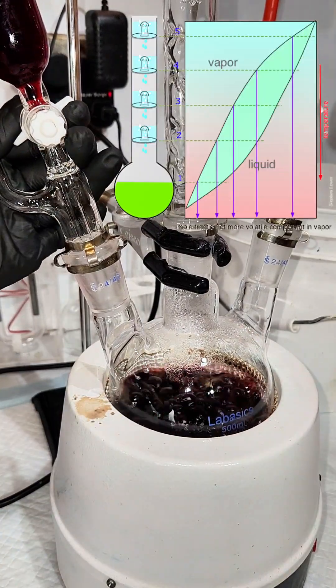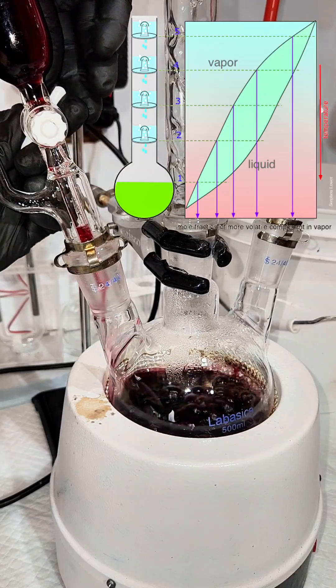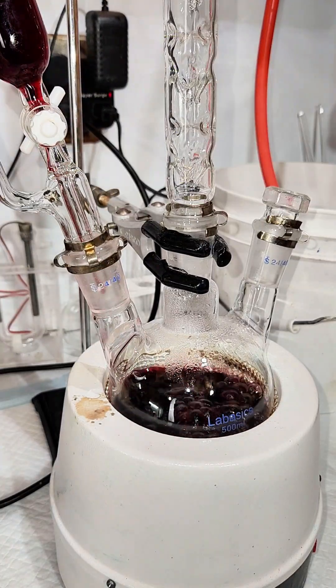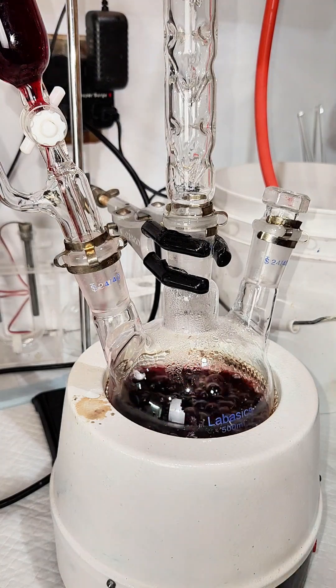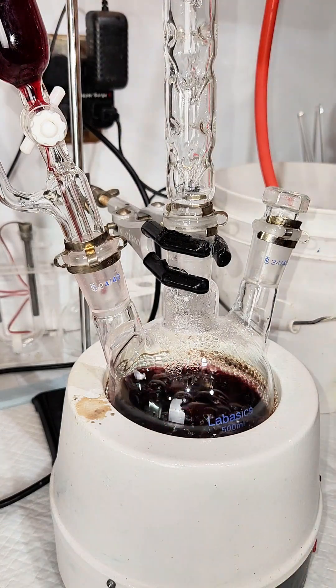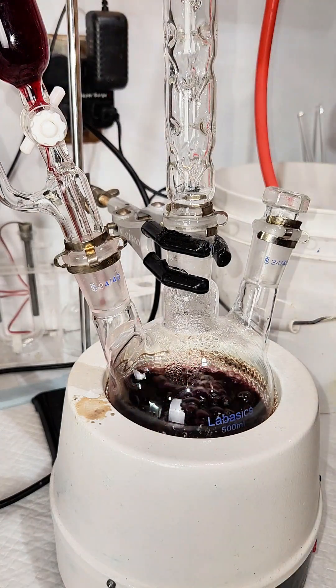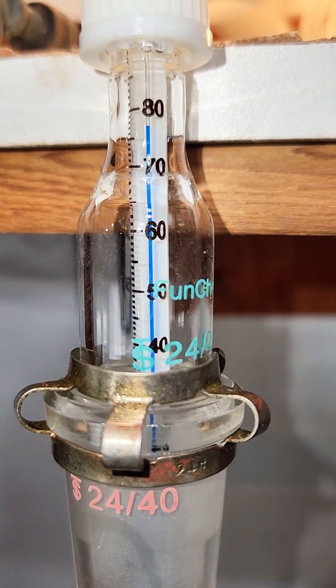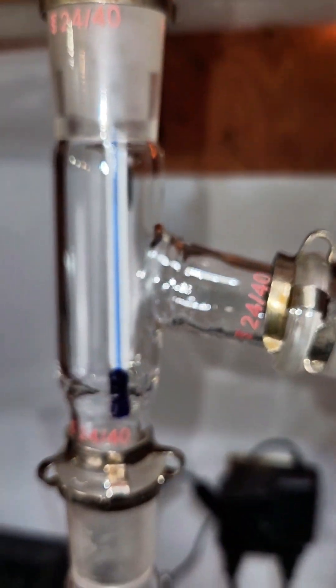This works due to the glass spikes in the column which condense water back into the flask all the way up the column. This takes advantage of Dalton's law and allows the absolute proportion of ethanol vapor to increase up the column. Anyway, that's about as much on fractional distillation as I want to cover in this video.